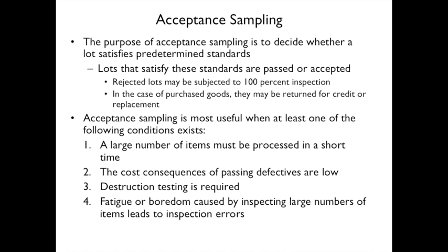Acceptance sampling is also appropriate when destructive testing is required — for example, if you're buying 10,000 bullets, you randomly pick 100 to fire and test rather than shooting all of them. Additionally, if fatigue and boredom from inspecting large numbers of items leads to inspection errors — passing items that should fail, or failing items that should pass — acceptance sampling is a better approach.